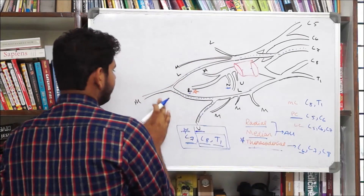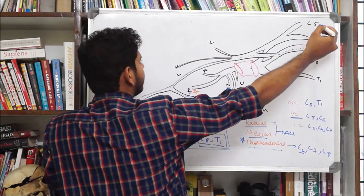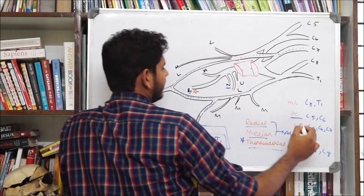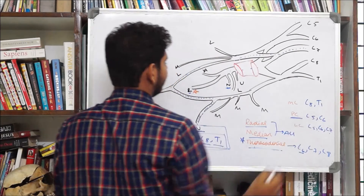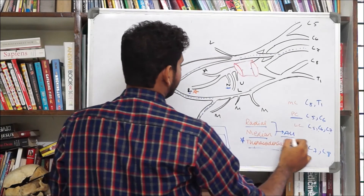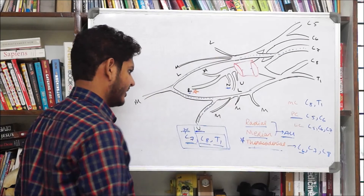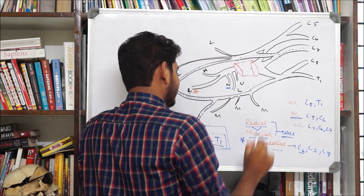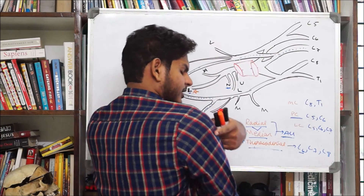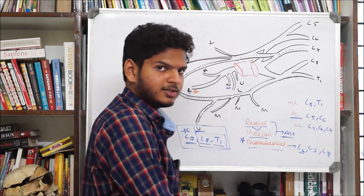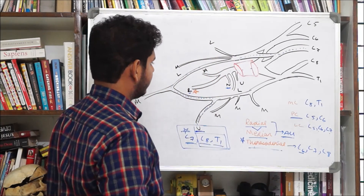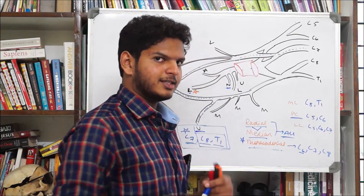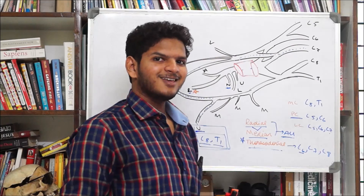We have the median nerve. As you can see, it is formed from both the lateral cord and the medial cord. So lateral cord has C5, C6, C7; medial cord has C8, T1. So the median nerve will also have all the roots of the brachial plexus. But in comparison, the size of the radial nerve is greater — it has to supply the entire extensor group of the superior extremity. So that was all about the brachial plexus. The applied parts we will discuss in the next video. Thank you.